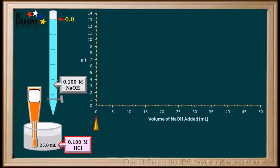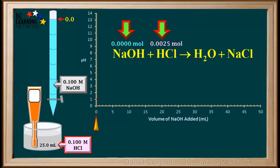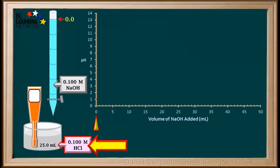We'll start with the pH before NaOH is added at all. At this point we have 0 moles of NaOH present and 25 milliliters or 0.025 liters times 0.1 mole per liter equals 0.0025 moles of HCl. Because all we have in the beaker is 0.1 molar HCl, the hydronium ion concentration is 0.1 molar, and the pH is equal to 1.